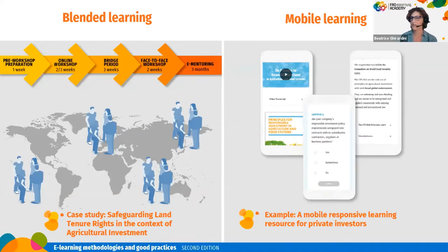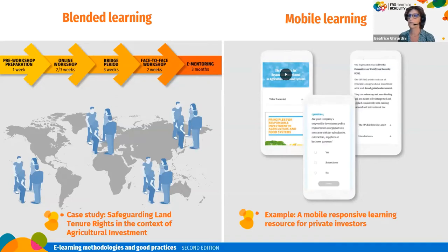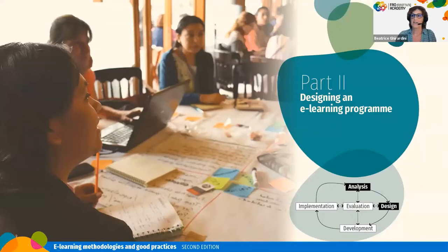In the guide's first part, there is an example of a mobile responsive resource for private investors on investing responsibly in agriculture, which consists of small elements: an introductory video, a self-assessment tool, and a series of short lessons suited for mobile learning. The second part is on the first stages of an e-learning program — the analysis and design. These are crucial steps for any kind of learning project, whether it is self-paced e-learning, a blended course, or a facilitated course.